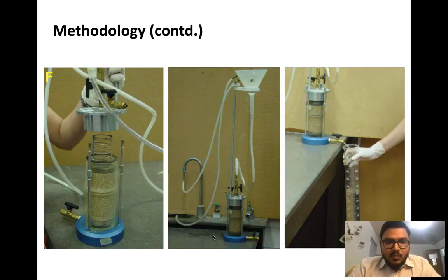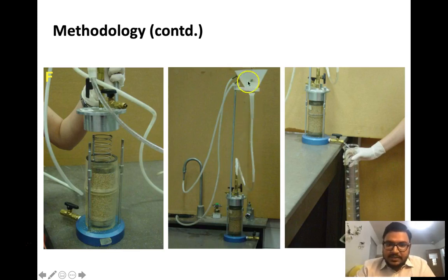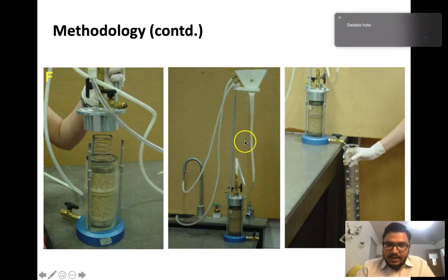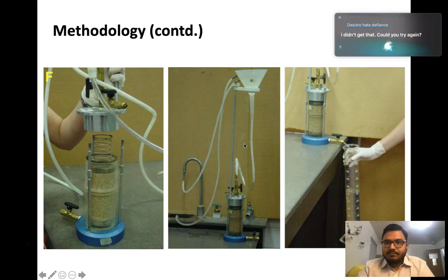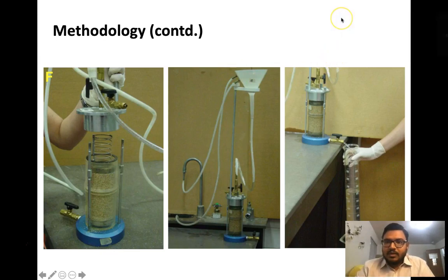After placing the soil samples, we will assemble the permeability cell and then connect the pipes to that cell. This is the head difference of that experiment. When we pour water above it, it will get the soil sample saturated and it will pass through the bottom.